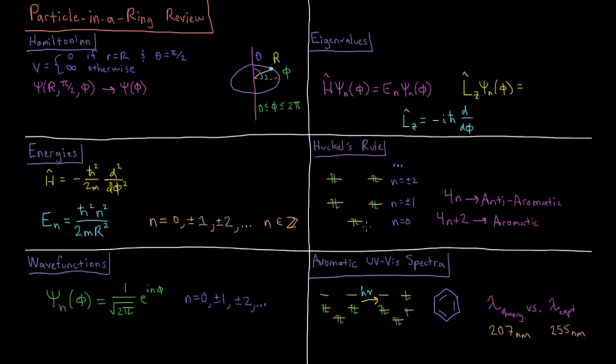This comes from the fact that the n equals zero level is singly degenerate, fitting two electrons, and then every energy level above that is doubly degenerate. So there are two orbitals, each of them doubly occupied, two electrons each gives us four electrons. So in order to have a completely filled subshell for n, we need to have 4n plus 2 electrons as we go up the ladder. Stable numbers of electrons include 2, 6, 10, etc. to be aromatic.